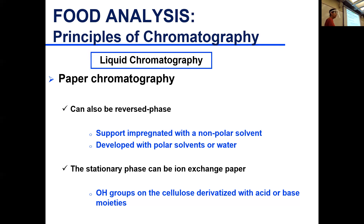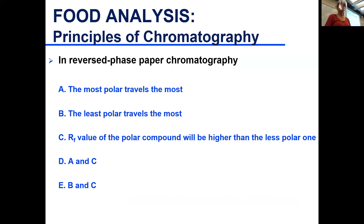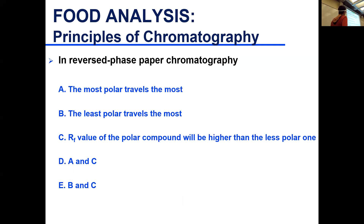This is very rare now because with the development of column chromatography, paper chromatography is seldom used. In reverse phase paper chromatography, your stationary phase is organic solvent impregnating the paper and your mobile phase is water. The correct answer is that polar compounds move furthest with a polar mobile phase, giving them a higher Rf value.